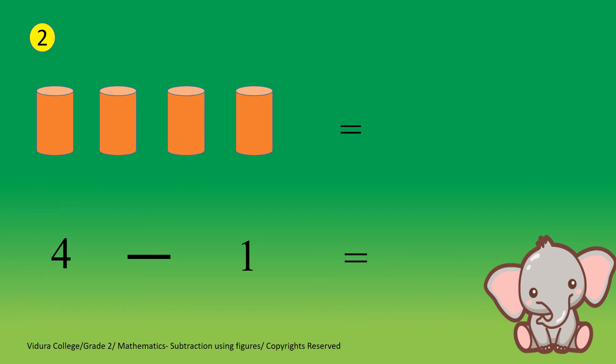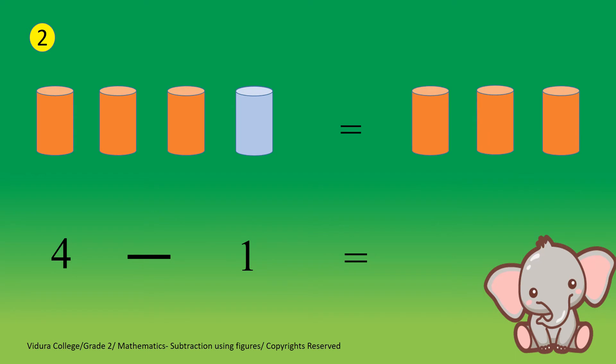Look at the second question. There are 4 cylinders and we have to take out 1 cylinder. Let's take out 1 cylinder. Now how many cylinders are remaining? Yes, 3. There are 3 remaining cylinders. So, 4 minus 1 equals 3.